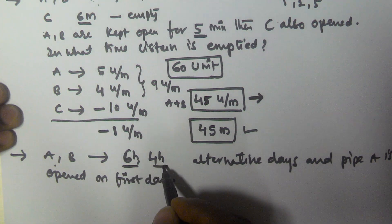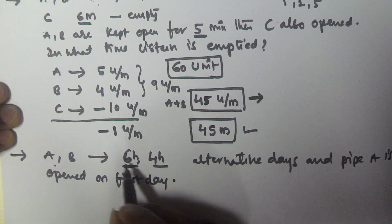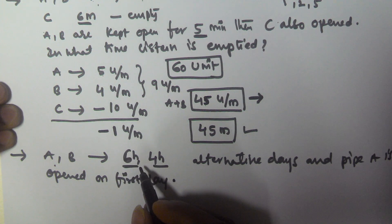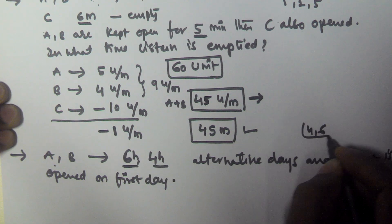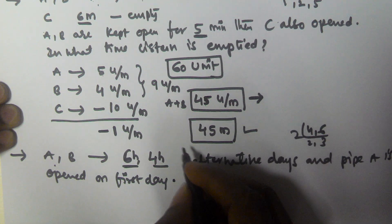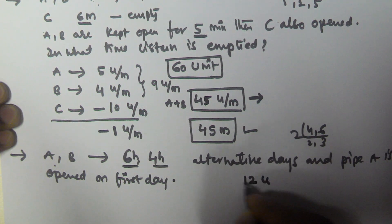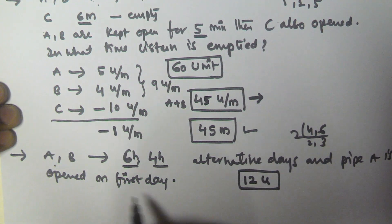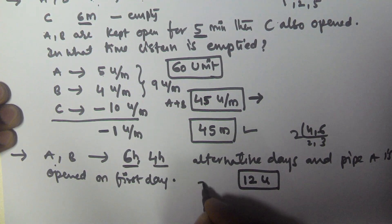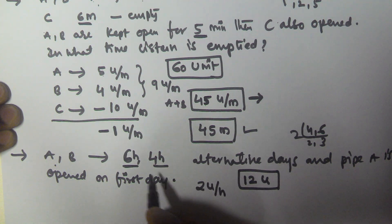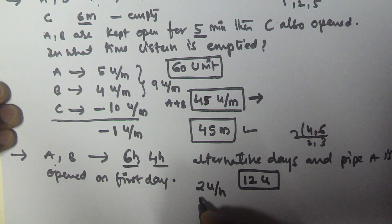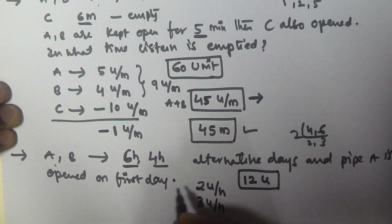In both cases the tank is the same, so I take the capacity as the LCM of 6 and 4. The LCM of 4 and 6 is 12, so the capacity of the tank is 12 units. A takes 6 hours, so it fills 2 units per hour. B takes 4 hours to fill the tank, so it fills 3 units per hour.